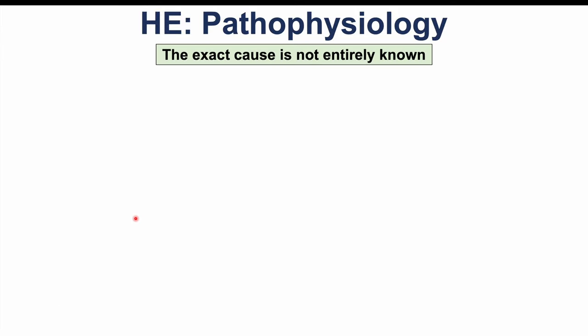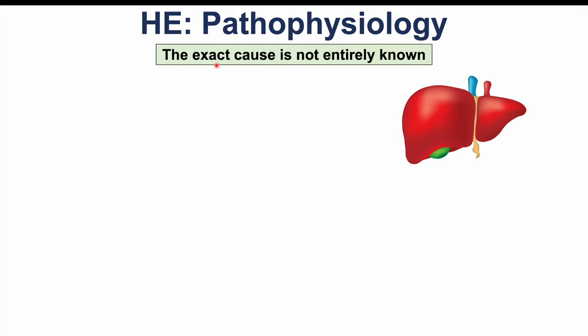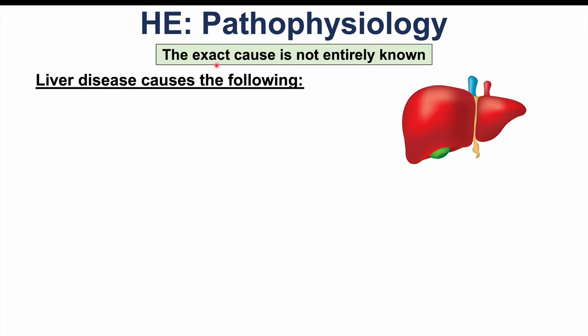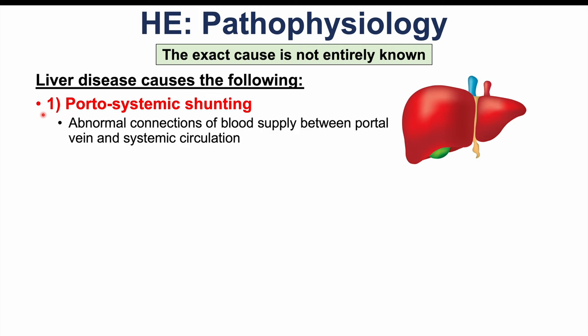Let's talk about the proposed pathophysiology behind hepatic encephalopathy. The exact cause is not entirely known, but what is known is that there is portosystemic shunting — abnormal connections of blood supply between the portal vein and the systemic circulation. The portal vein draws in blood from the gastrointestinal system to purify it before it enters the systemic circulation, but because of scarring and portal hypertension, these abnormal connections occur before that blood gets to the liver.